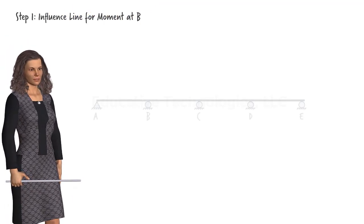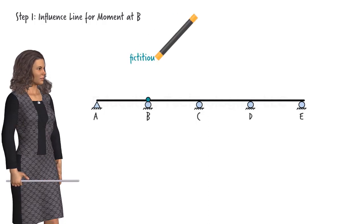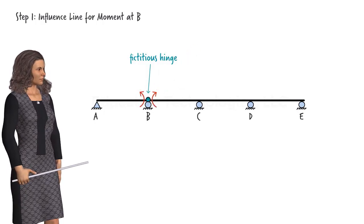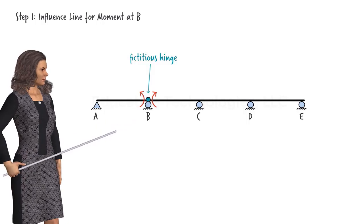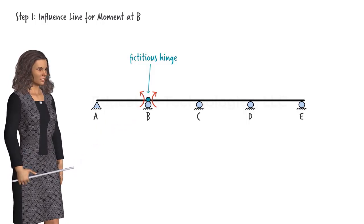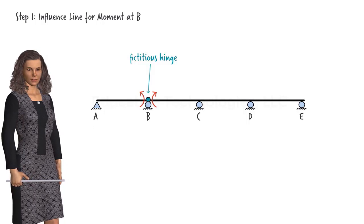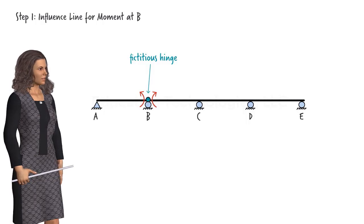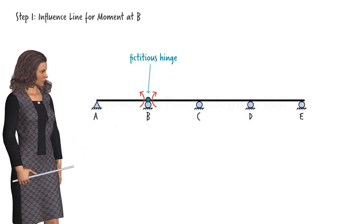Step 1. Draw the influence line for bending moment at point B. To draw the influence line, we are going to place a fictitious hinge at point B. Then we draw the deformed shape of the beam due to a positive bending moment placed at the hinge. If you are not familiar with this qualitative approach for drawing influence lines, please review lecture SA16 through SA18. The bending moment at the left side of the hinge pushes segment AB down, like this.